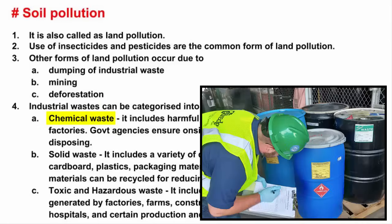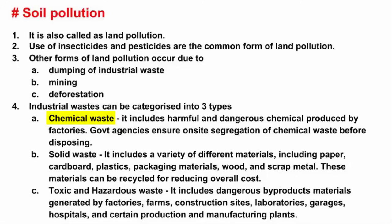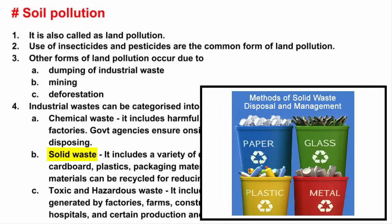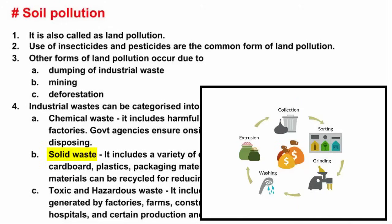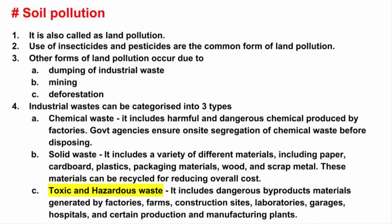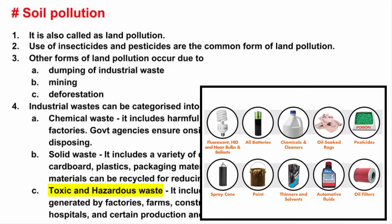Chemical waste includes harmful and dangerous chemicals typically generated by factories. There are rules and regulations made by the government and environmental agencies to ensure chemical waste is segregated on site before disposing. Solid waste in industrial services includes a variety of materials such as paper, cardboard, plastics, packaging materials, wood, and scrap metal. Some of these materials can be reused and recycled, which is important because it effectively reduces waste disposal costs. Toxic and hazardous waste comprises materials that can cause serious health and safety problems if not handled correctly. This type of waste typically includes dangerous by-products generated by factories, farms, construction sites, laboratories, garages, hospitals, and certain production and manufacturing plants. Disposal of this waste is only legal at special designated facilities.